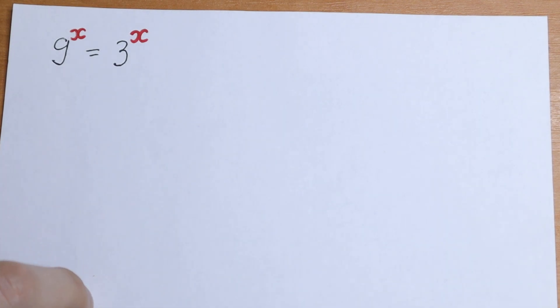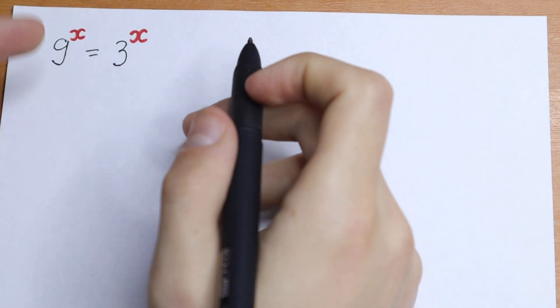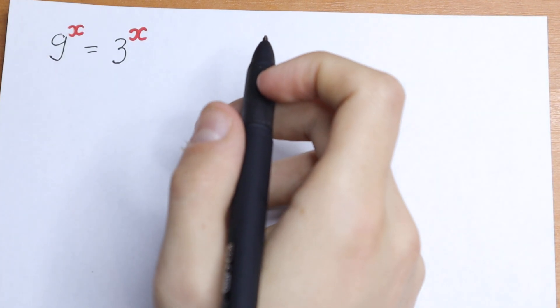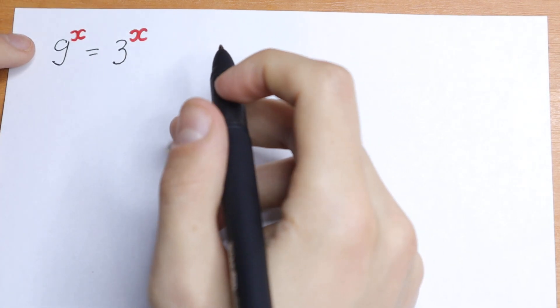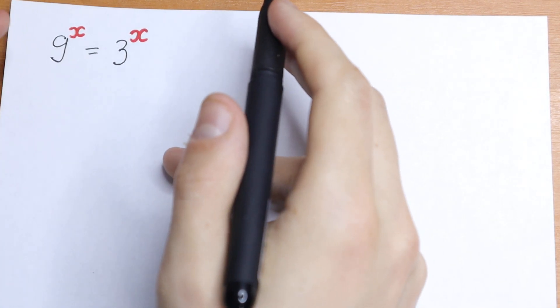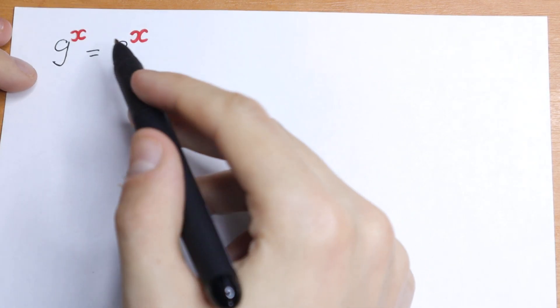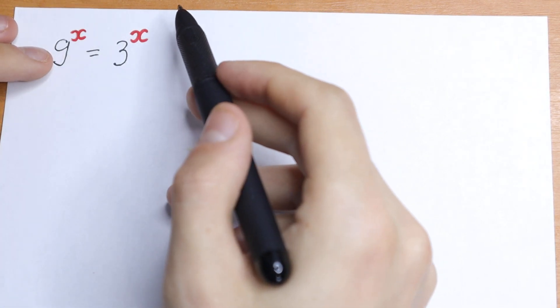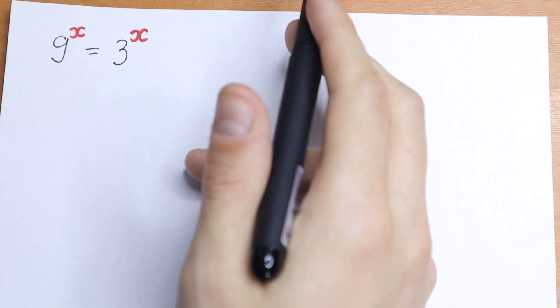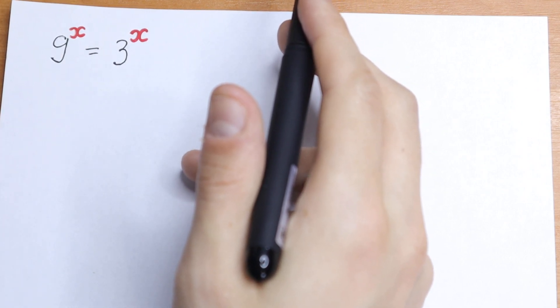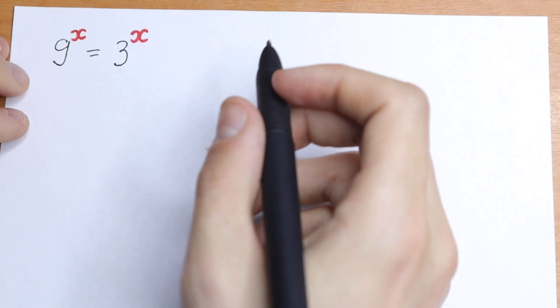Hello everyone, welcome back to Mathmoo. Today we have an interesting equation: 9 to the power x equal to 3 to the power x. At first glance, this equation looks hard because we have an exponent with different bases, but we can easily solve it step by step.